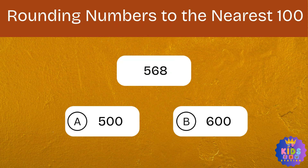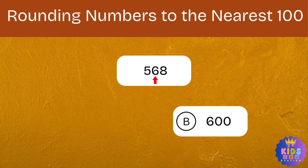Let's take the number 568. To round to the nearest hundred, we look at the tens place. In 568, the tens digit is 6. If the tens digit is 5 or more, we round up. If it's 4 or less, we round down. Since the tens digit here is 6, we round up. So 568 rounded to the nearest hundred is 600.